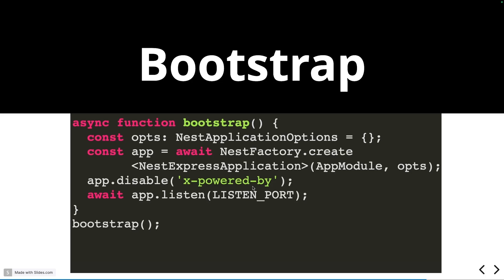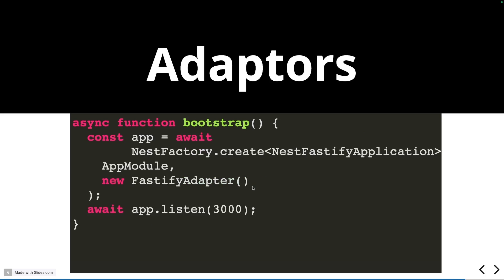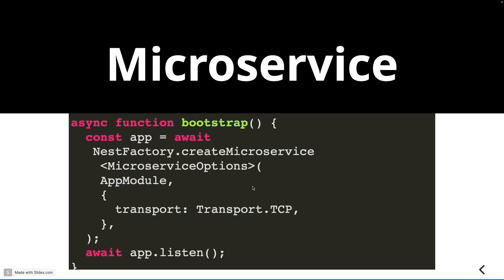NestJS can be bootstrapped with either an Express adapter or a Fastify adapter — so if you love Fastify, you can use the Fastify adapter. NestJS is essentially an abstraction on top of your HTTP adapter. Importantly, NestJS also provides microservices interfaces, allowing you to build microservices using different transport modes like TCP, AMQP event-driven, gRPC, Kafka, or RabbitMQ for communication between services.